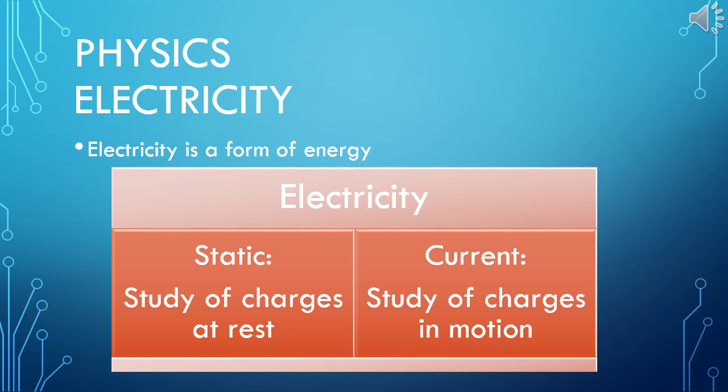Let us revise first video of electricity. Electricity is a form of energy. Electricity has two types: static electricity and current electricity. Study of charges at rest is known as static electricity. Study of charges in motion is known as current electricity. In this lesson you are going to explore knowledge about charges in motion, that is current electricity.